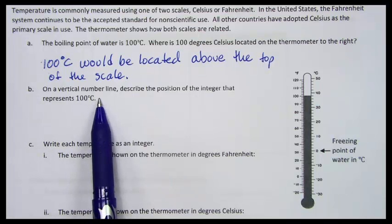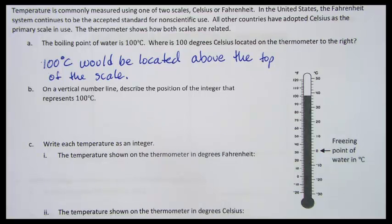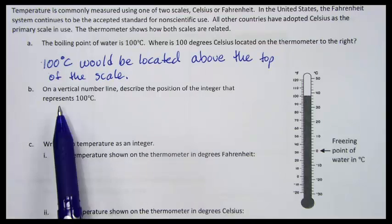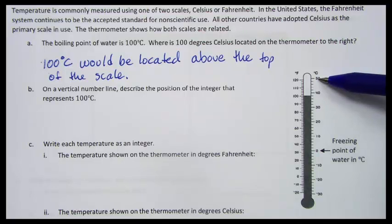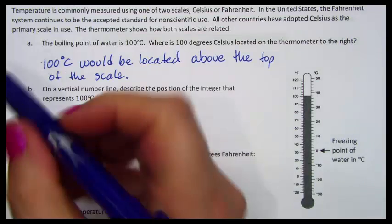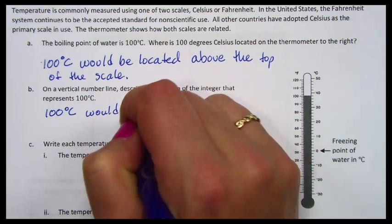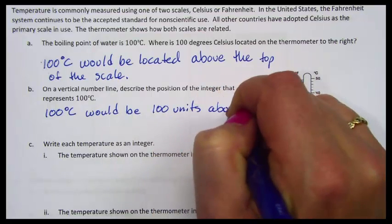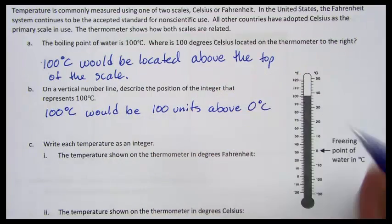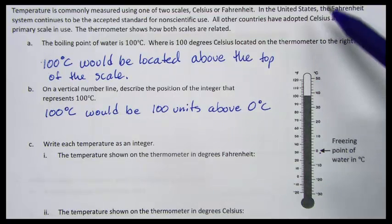located above the top of the scale. On a vertical number line, we want to describe the position of the integer. Remember, an integer is a set of whole numbers and their opposites that represents 100 degrees Celsius. We could say that 100 degrees Celsius would be 100 units above zero. 100 degrees Celsius. So here is zero degrees Celsius. It would be 100 units above.